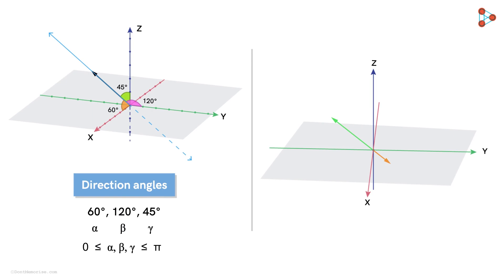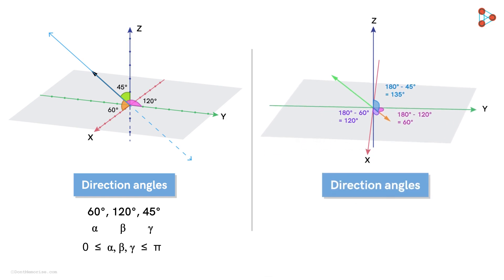Both sets of direction angles are related. Observe that if this angle is 60 degrees, then this angle made by the line in the opposite direction with the positive x-axis is 180 degrees minus 60 degrees. Similarly, these two angles are 180 degrees minus 120 degrees and 180 degrees minus 45 degrees. So this is the second set of direction angles of this line.